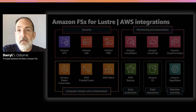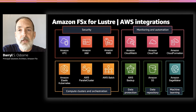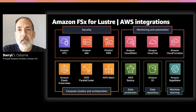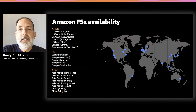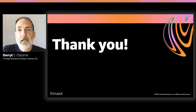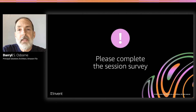FSx for Lustre offers a number of integrations with existing AWS services. Beyond S3, you can easily mount your file systems to workloads orchestrated using Amazon EKS, AWS ParallelCluster, and AWS Batch. You can also use FSx for Lustre for machine learning workloads with Amazon SageMaker. Today, Amazon FSx is available in 19 regions and the US West Local Zone in Los Angeles, with more coming soon. Thank you for watching this session on Amazon FSx for Lustre — please complete the survey.